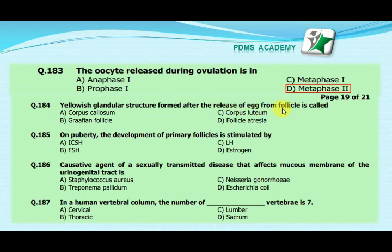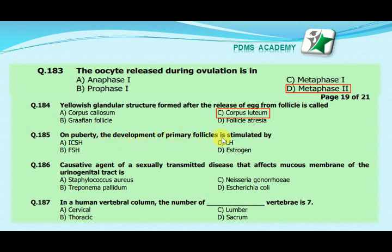Our next MCQ is: the yellowish glandular structure formed after the release of an egg from the follicle is called — option A: corpus callosum, option B: Graafian follicle, option C: corpus luteum, option D: follicle atresia. The correct answer is C, corpus luteum.